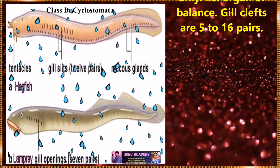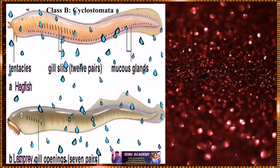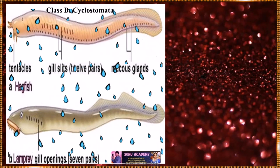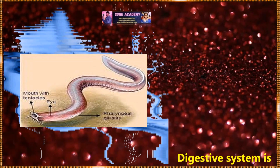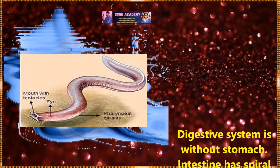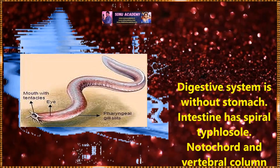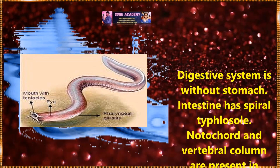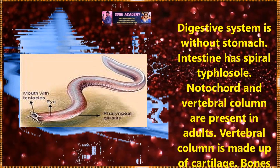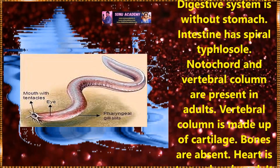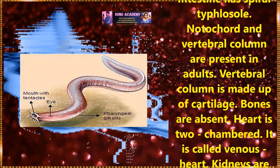Gill slits are five to six pairs. Digestive system is without stomach. Intestine has a spiral typhlosole. Notochord and vertebral column are present in adults. Vertebral column is made up of cartilage. Bones are absent in these fishes. Heart is two-chambered and is called a venous heart.